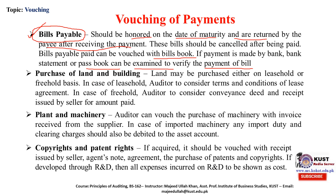For purchase of land and building, payment against purchase of either leasehold or freehold land is examined. In case of a lease, the auditor considers the terms and conditions of the lease — whether it is an operating lease or a capital lease. In case of freehold, the auditor considers the conveyance deed and receipt issued by the seller. The lease agreement should be examined for leasehold, and the deed and receipt for freehold purchases.